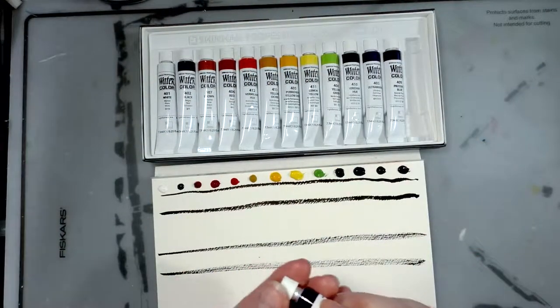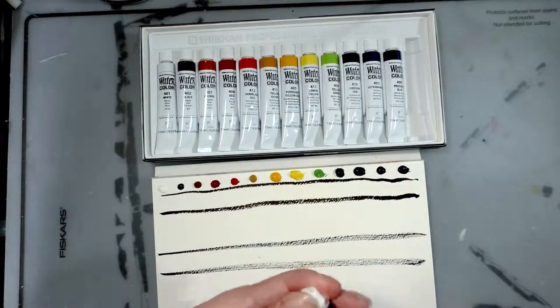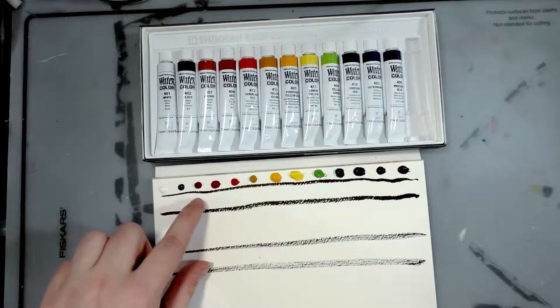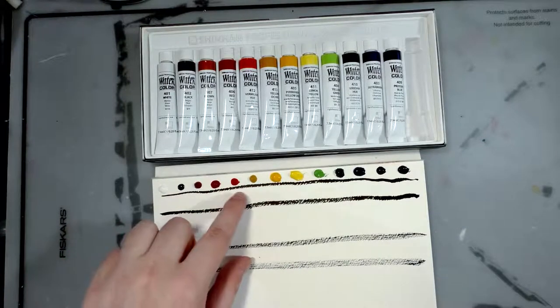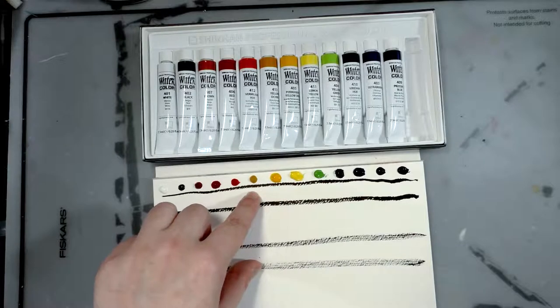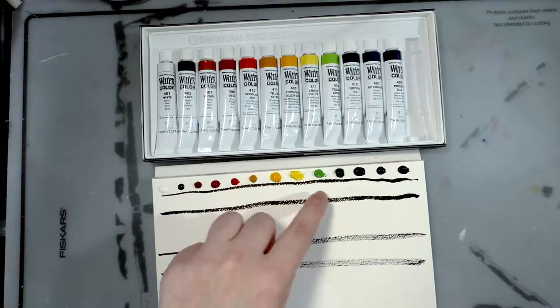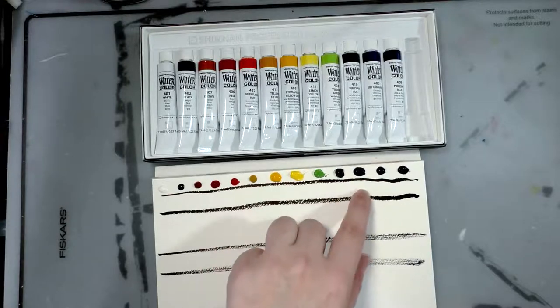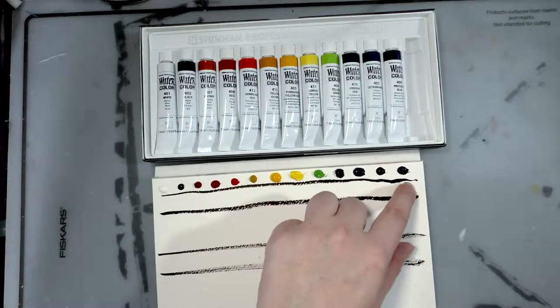All right, we've got all 13 colors: white, black, brown, red, vermilion hue, yellow ochre, permanent yellow deep, lemon yellow, yellow green, viridian hue, ultramarine, prussian blue, and violet.